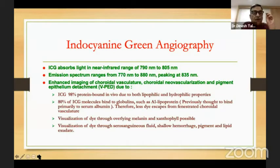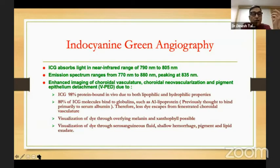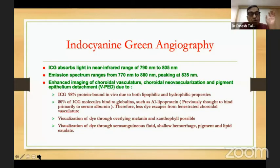The characteristics of ICG are that it absorbs light at 790 to 805 nanometers, and the emission spectrum is from 770 to 880 with a peak at 835 nanometers. The advantage is it can give you enhanced imaging of the choroidal vasculature, choroidal neovascularization, and pigment epithelium detachment. Most of this dye is protein bound, and 80% of ICG molecules actually bind to globulins — previously it was thought to be albumin.